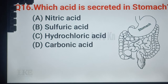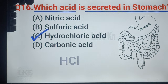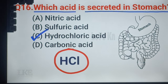Question number 16: which acid is secreted in the stomach? A. Nitric acid, B. Sulphuric acid, C. Hydrochloric acid, D. Carbonic acid. Right answer: C, Hydrochloric acid. The chemical formula of hydrochloric acid is HCl. Remember, it is a very important question.